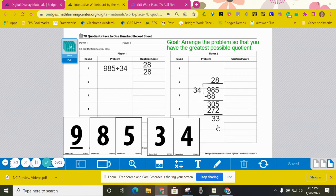These are the instructions for Workplace 7B, quotients raised to 100. For this game, each pair of players needs their math journals, one deck of number cards with the wild cards removed, and one quotients raised to 100 record sheet to share.